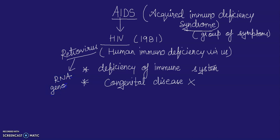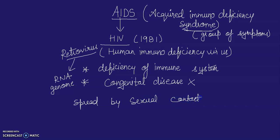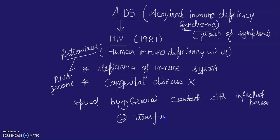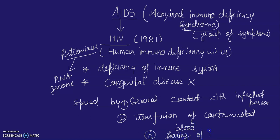Transmission of HIV infection generally occurs by sexual contact with an infected person, by transfusion of contaminated blood and blood products, or by sharing of infected needles, as in the case of intravenous drug abusers.